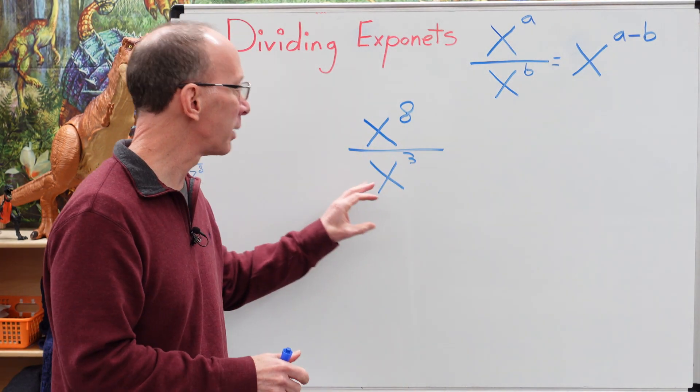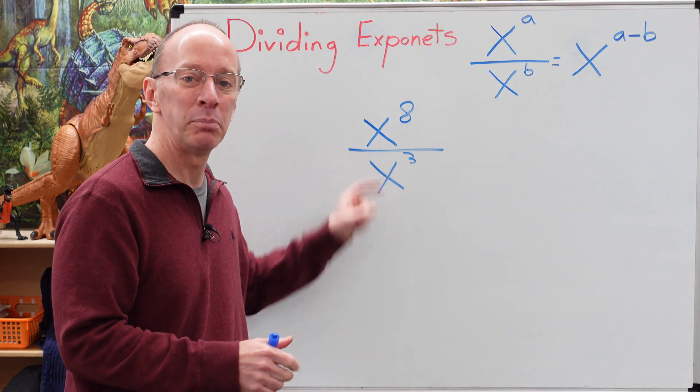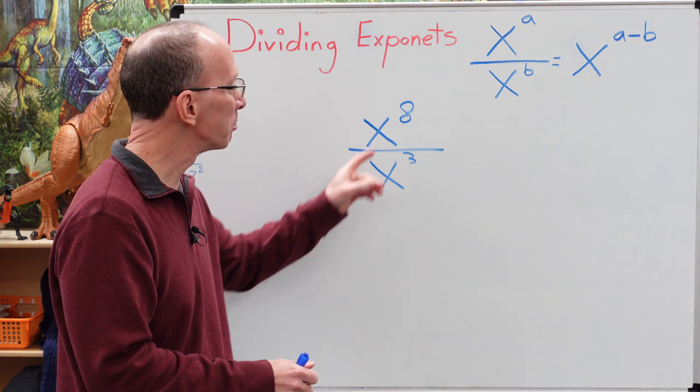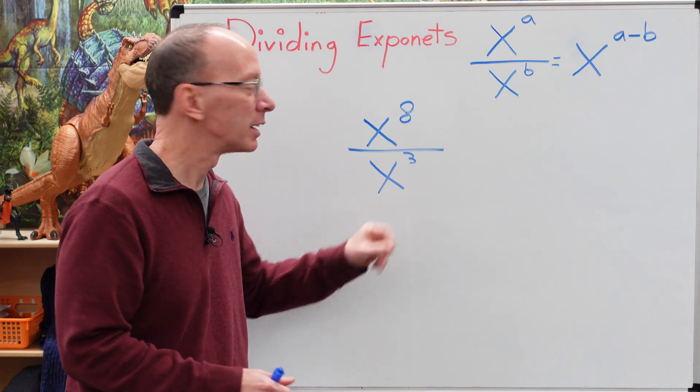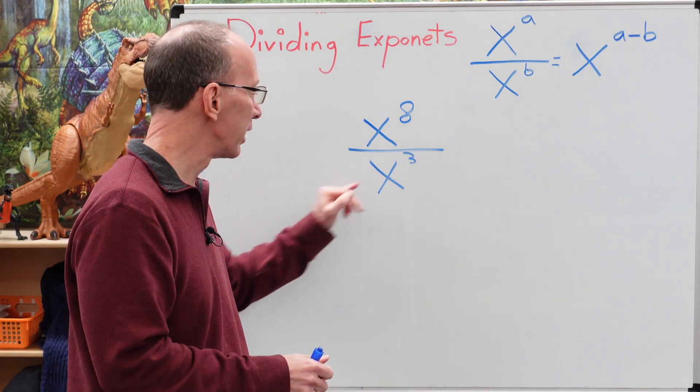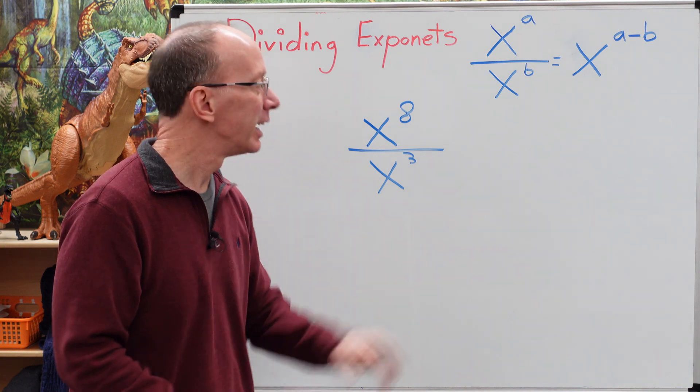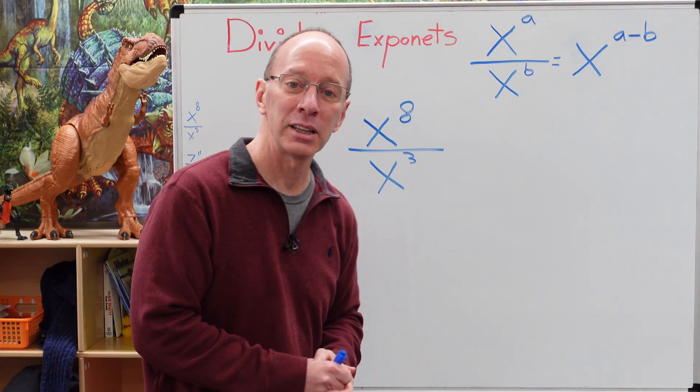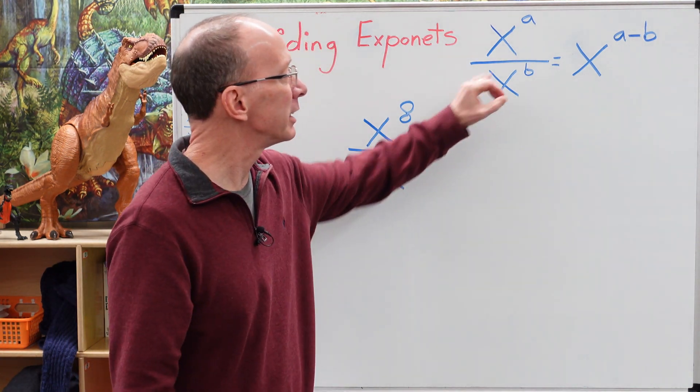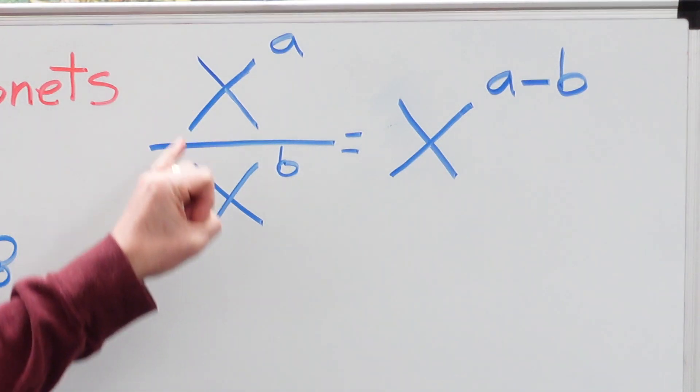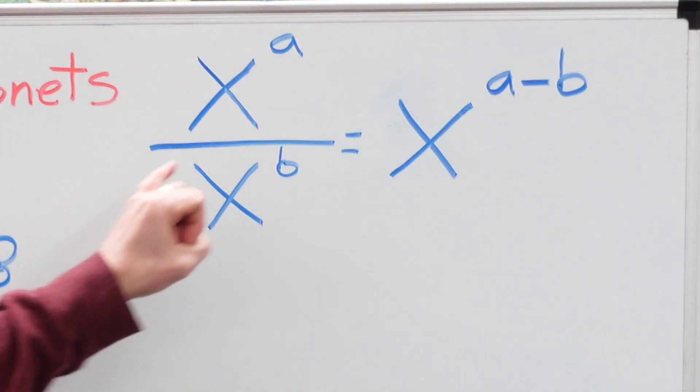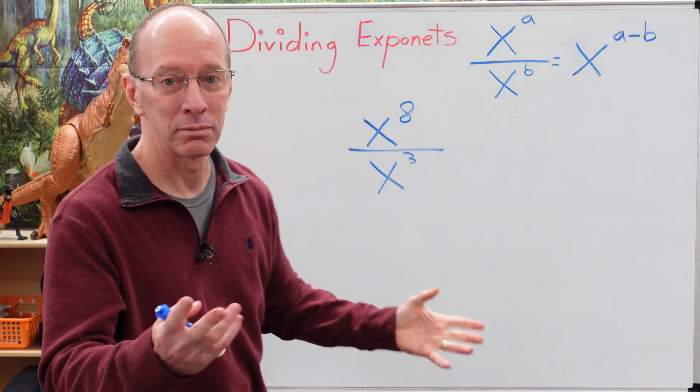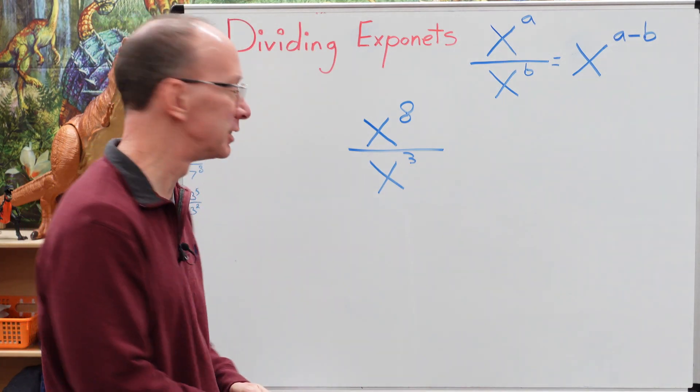So right away I'm taking a look at this problem and I notice that both of these bases are the same, but they have different exponents. So we have x to the power of 8 divided by x to the power of 3. I also have a secret formula that you can use: if we have the common base, all we have to do is subtract the exponents. So let's dive right into it.